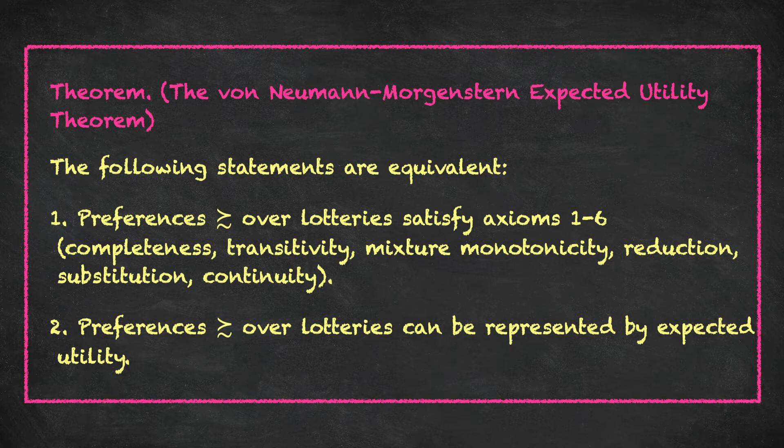The fact that statement two — expected utility — represents preferences, and that this implies statement one, I left as an exercise to be discussed on the Piazza forum for this course. In this video, we're going to prove the more difficult statement: that if statement one is true, if we have a preference relation over lotteries satisfying axioms one through six, then we can construct an expected utility representation of those preferences.